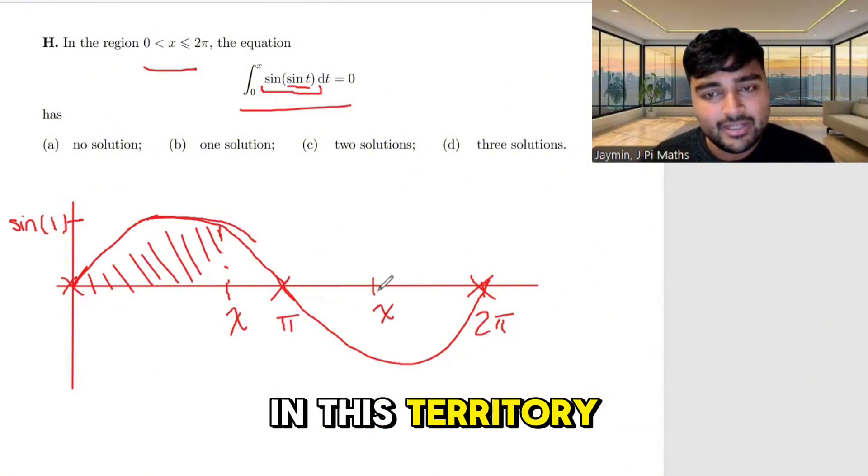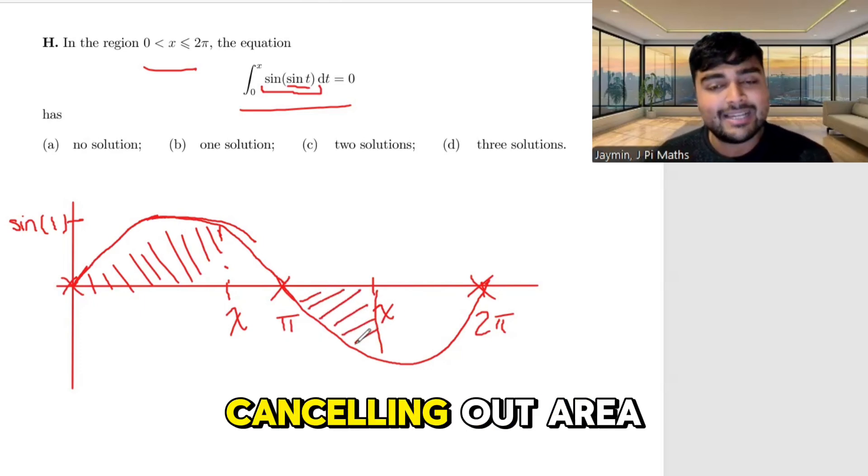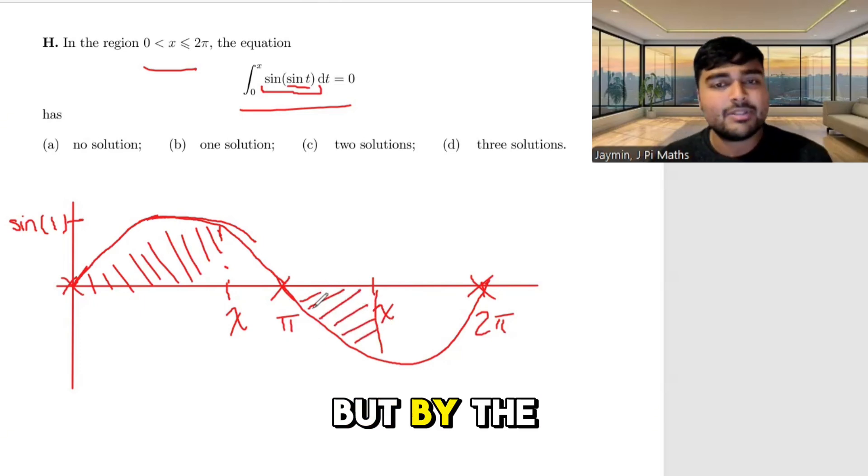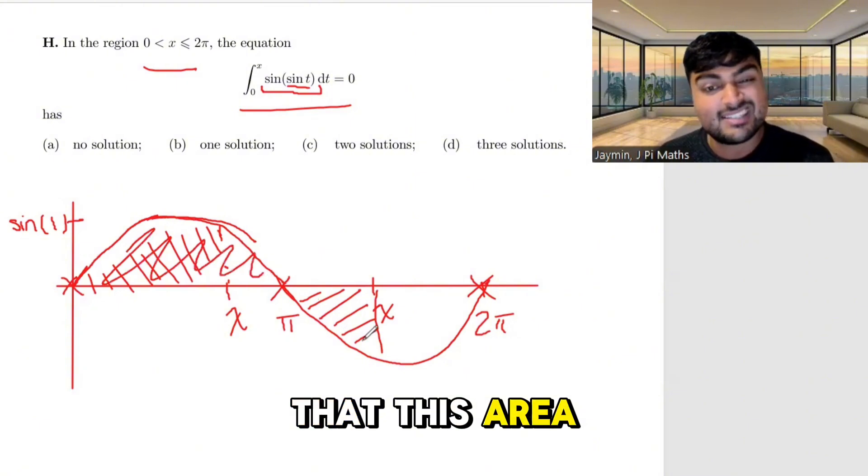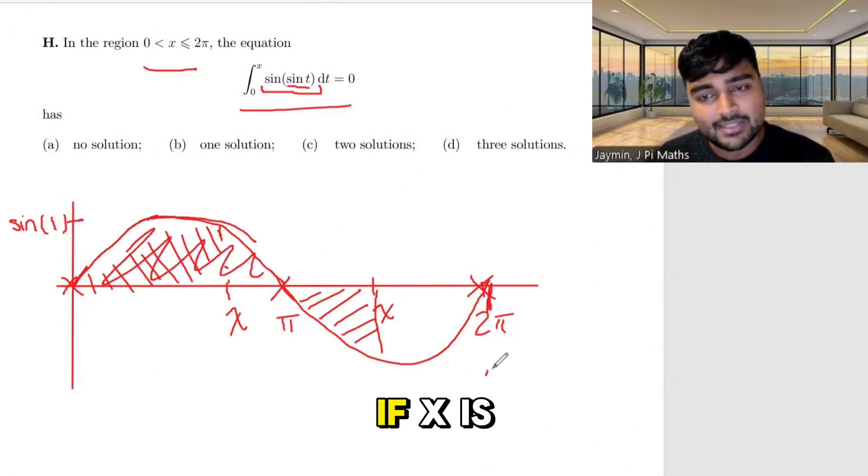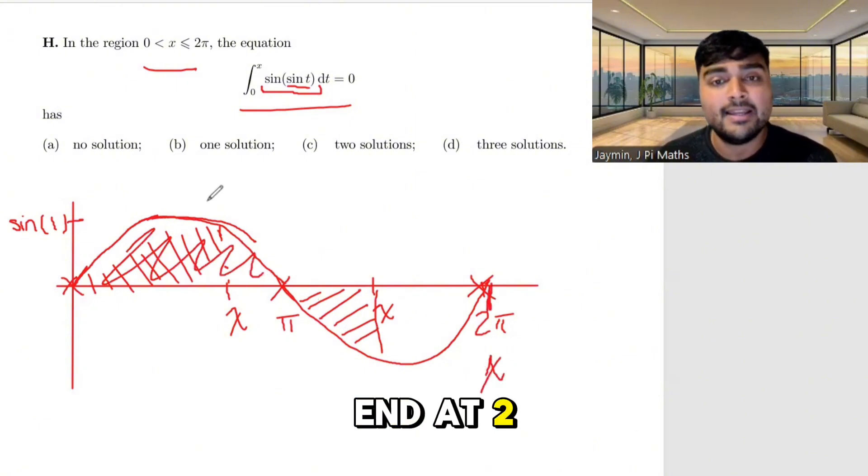And in fact, we need x to be somewhere in this territory in order to start cancelling out area. But by the symmetry of this curve, the only way that this area can be entirely cancelled out would be if x is right at the end at 2 pi.